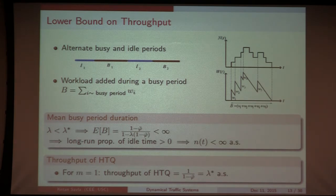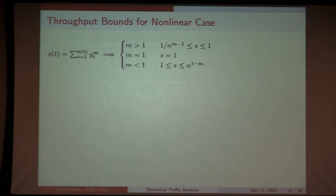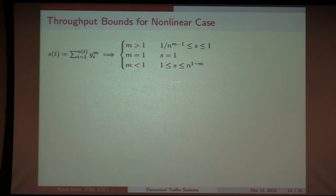Such clean results unfortunately do not carry forward for the nonlinear case. There we have to be careful about initial conditions, and results hold only probabilistically. What I want to do is characterize initial conditions that are quite natural, from which the queue will become stable. For the nonlinear case, you can already get bounds on throughput from the linear analysis. Since each yi is strictly less than 1 on a unit road, yi^m < yi if m > 1 (superlinear) and yi^m > yi if m < 1 (sublinear), giving bounds on the instantaneous service rate relative to the linear case.